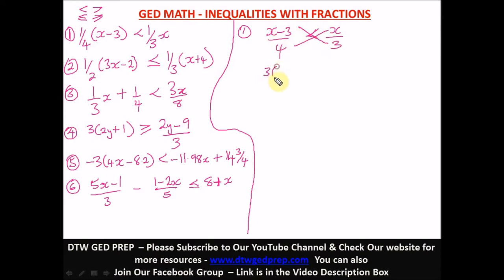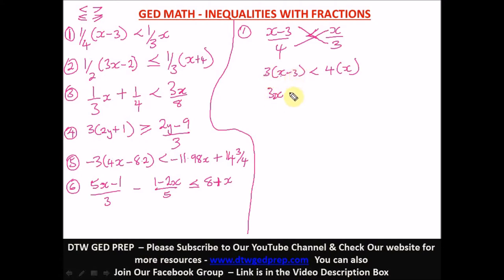We open up the bracket: three times x gives us 3x, and three times negative three gives us negative nine, less than four times x which is 4x.